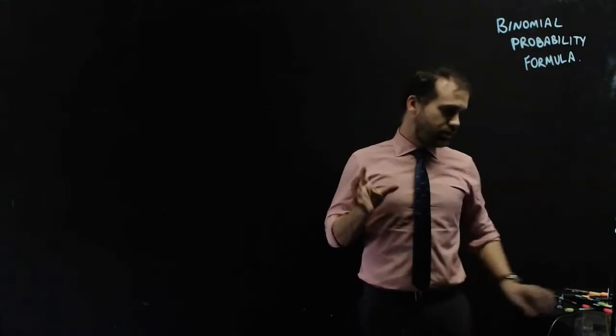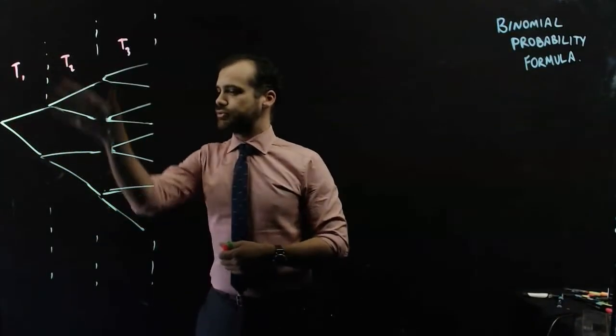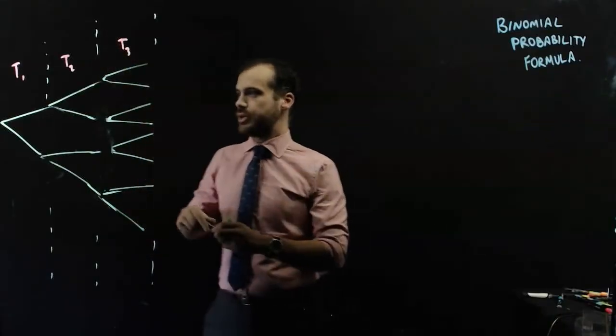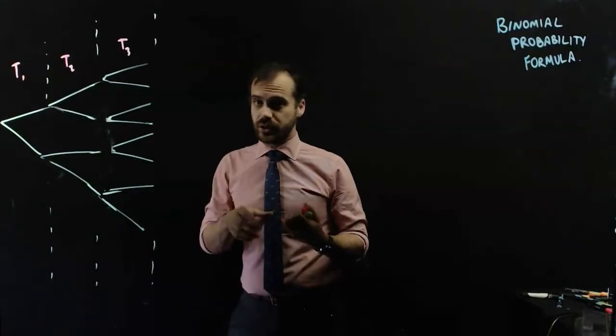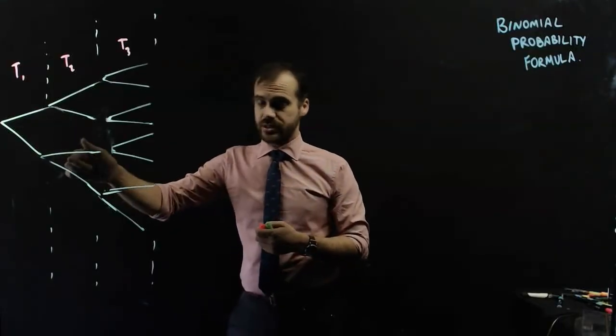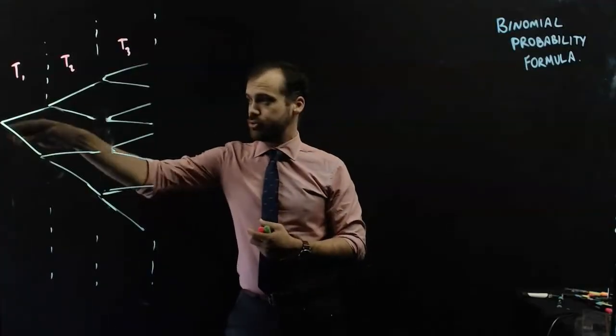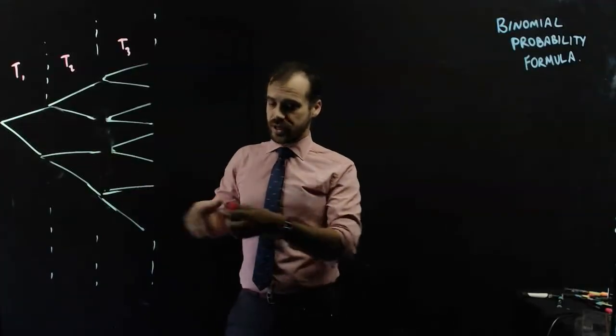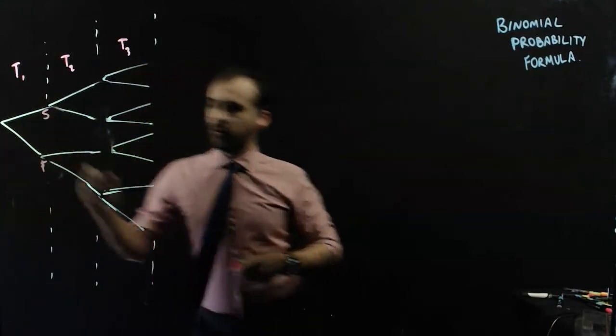First we're going to need a tree diagram. So this is going to be my tree diagram. We've got trial 1, trial 2, trial 3. And you can see there's only two options. So maybe we're flipping a coin, maybe we're rolling dice and hoping for a 6 or not a 6. Maybe we're pulling cards out of a deck and we're hoping for a heart or not a heart. In any of those cases there are only two options, success or failure.